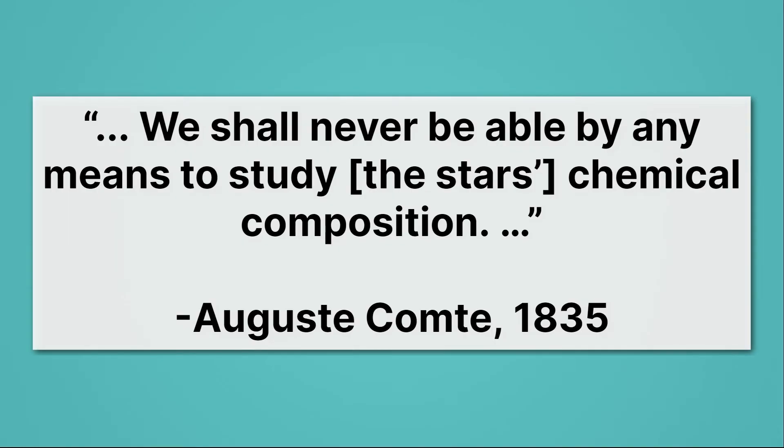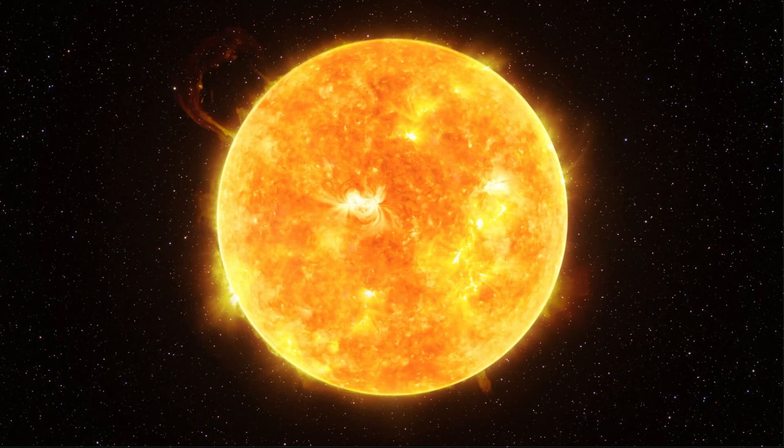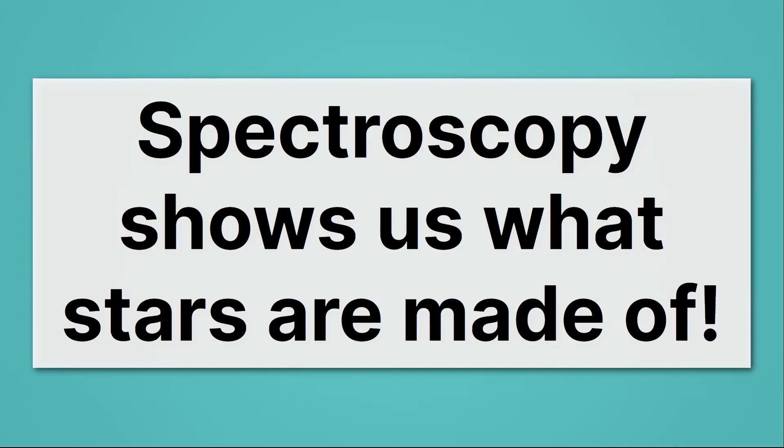That seems like a reasonable claim because you can't visit it. So how are we going to know what it's made of? The trick is quantum mechanics. Quantum mechanics predicts exactly what light different elements emit. And it turns out the sun is mostly hydrogen. We use a tool called spectroscopy, and spectroscopy shows us what stars are made of. Quantum mechanics is at the heart of spectroscopy.